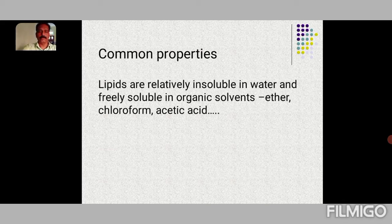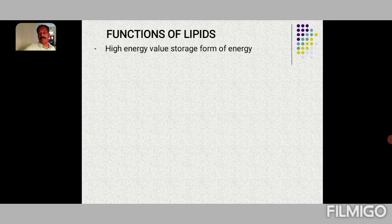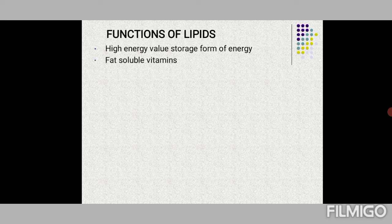First, lipids form the high-energy storage form of energy. Fat is the most energy-dense of common energy nutrients — fat provides nine kilocalories per gram, which is more than twice the energy provided by carbohydrates or proteins.